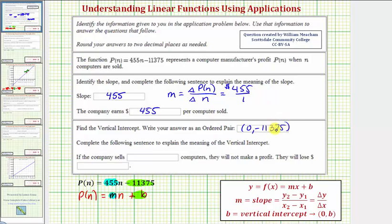The vertical intercept also tells us the function value when the input is zero, meaning p of zero is equal to negative 11,375, which means if zero computers are sold, the profit is negative 11,375, which means they would lose 11,375 dollars if they sell zero computers.